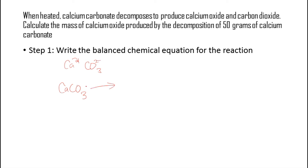Calcium carbonate decomposes or breaks down — there are no other reactants — so we put our arrow and can write heat. It breaks down to produce calcium oxide. Calcium is Ca2+ and the oxide ion is O2-; their charges are balanced, so the formula is simply CaO. The question also says carbon dioxide, which is molecular, and the name gives us the formula: carbon plus di- (meaning 2) plus oxide, so the formula is CO2.